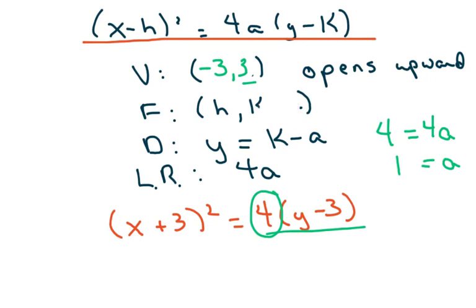So we're going to write 4 here, and I just copied down my h, which was negative 3. And your directrix is a line, a horizontal line, which is going to be 3 minus 1, which is y equals 2. And your latus rectum—your a is 1, so 4 times 1 is just 4. That's going to give you the length of it.